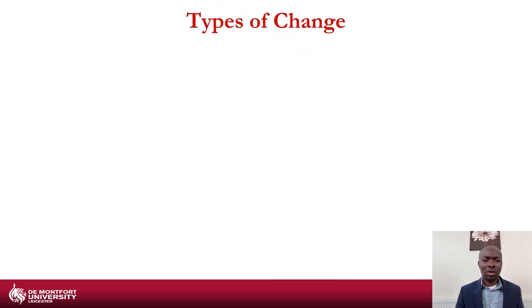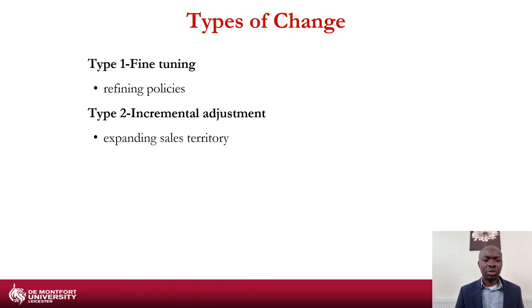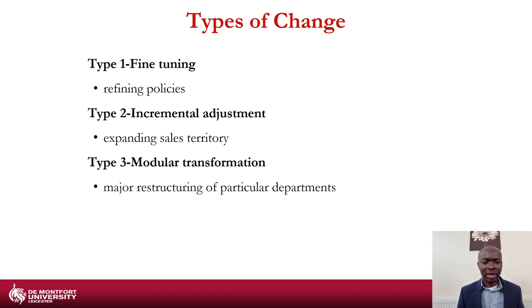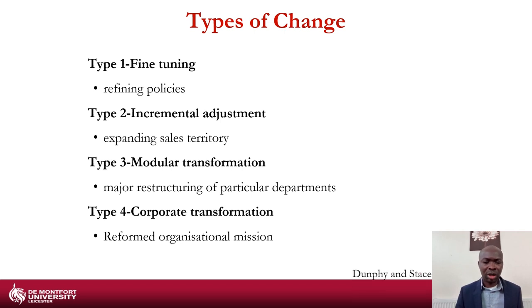Other types include type one — fine-tuning, where you're refining your policies; type two — incremental adjustment, such as trying to expand your sales territory; modular transformation — major restructurings of particular departments within the organisation; and corporate transformation — perhaps rebranding the organisation or reforming organisational missions.